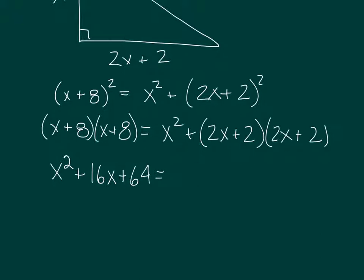On the right-hand side, we're going to have x squared plus 2x plus 2x times 2x gives us 4x squared. If I look at the outer terms, that's 4x.